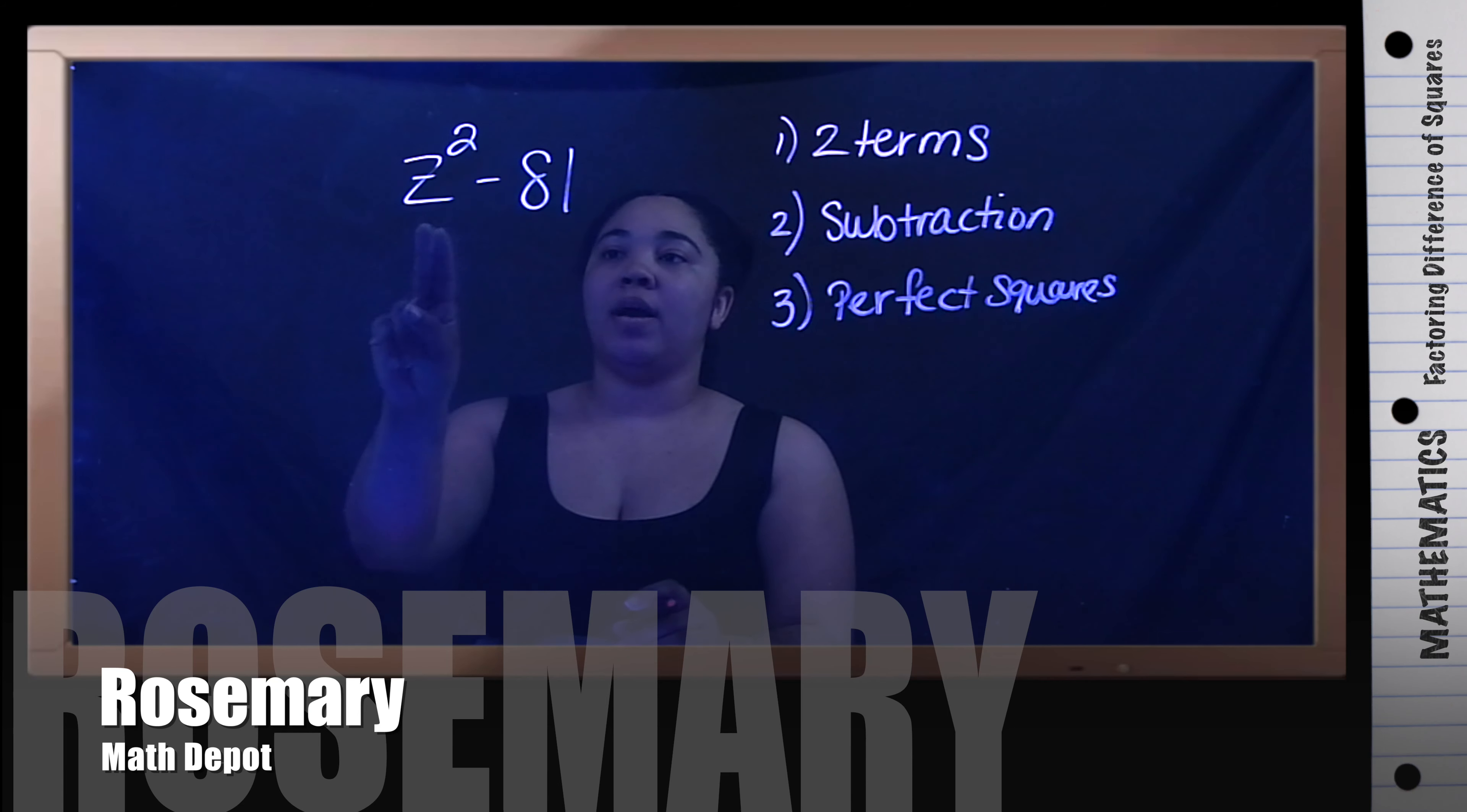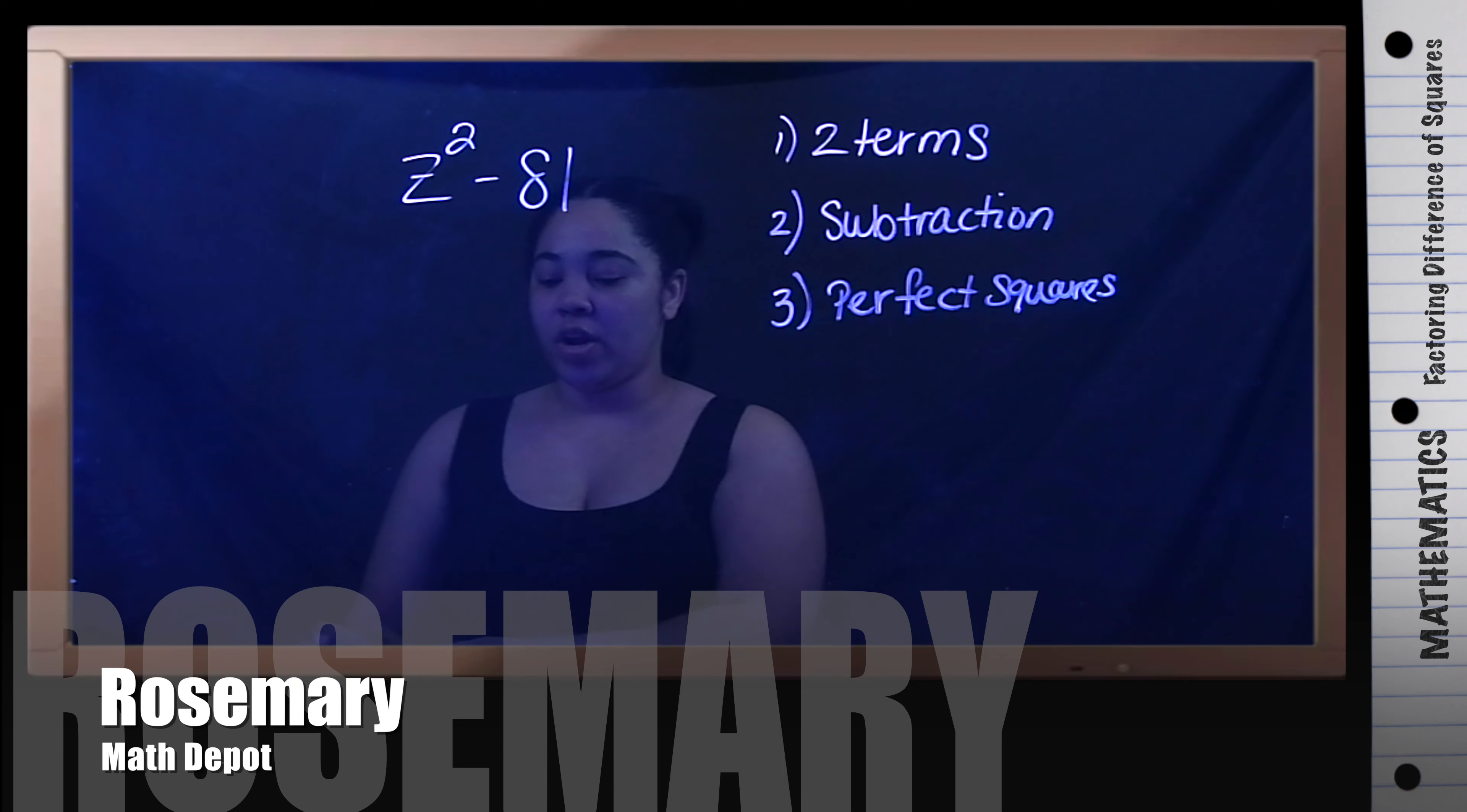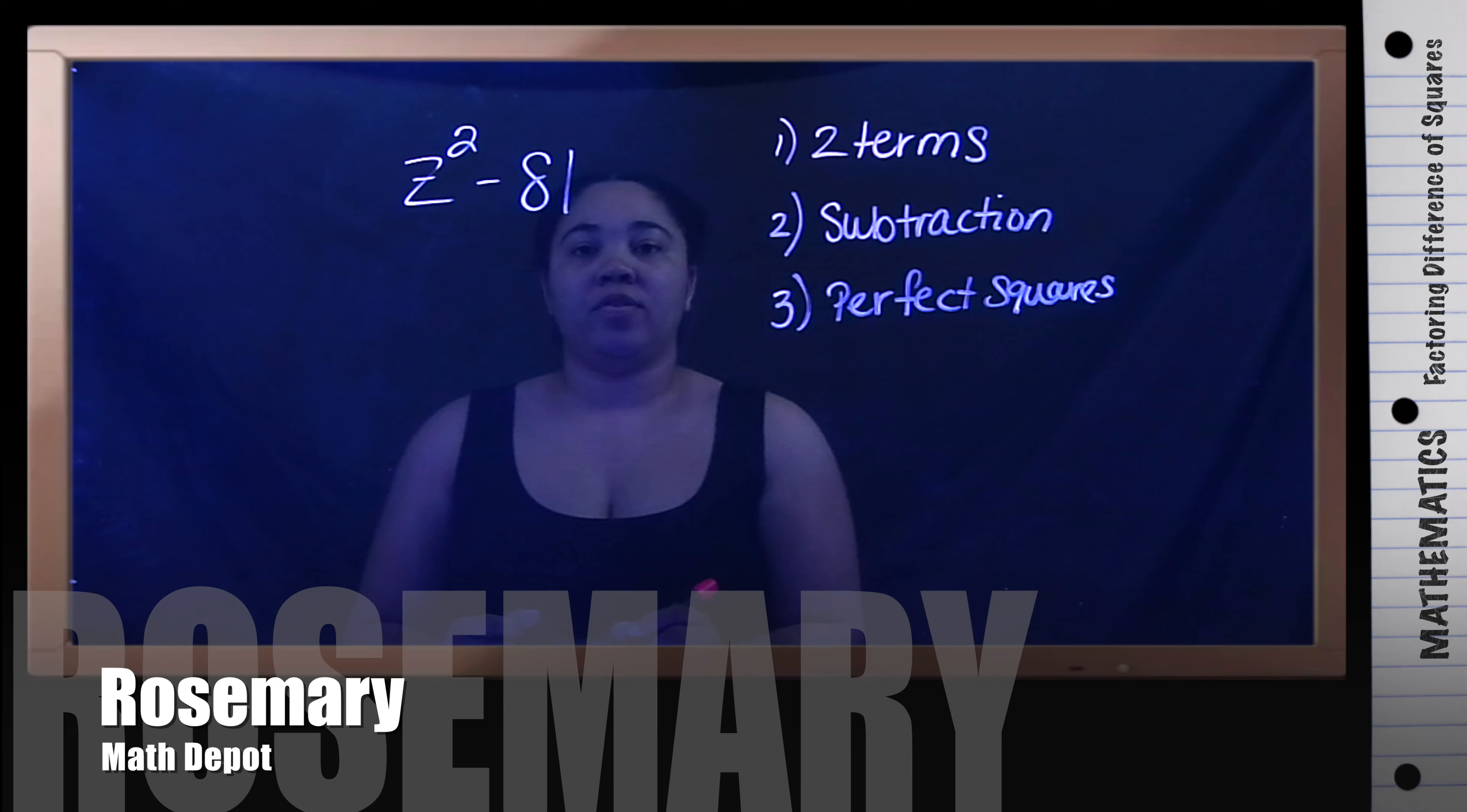So in this problem, I do have two terms here. I do have a subtraction, and I'm going to focus on each term individually. And what I want to know is, are they perfect squares?